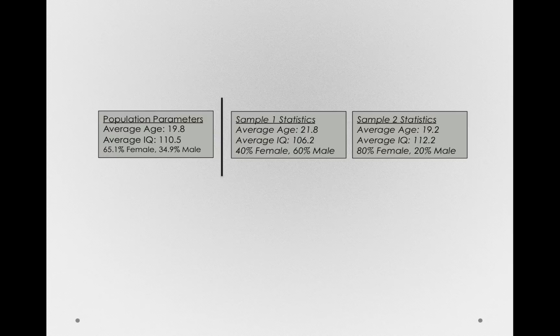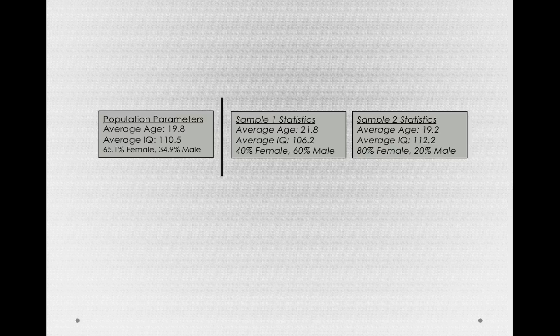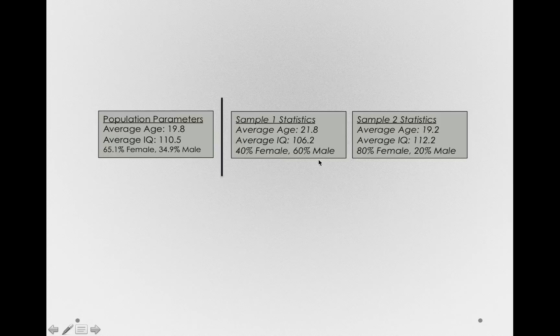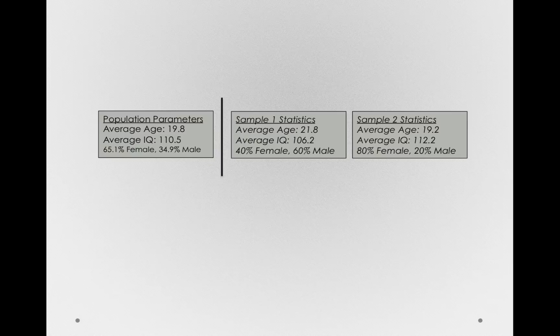Now in terms of IQ, again, we see that our samples differed from the population. And in terms of the proportion of males and females, notice our samples differed quite a bit from each other and also from the population. So there is a discrepancy between the statistics in our samples and the true population parameters.